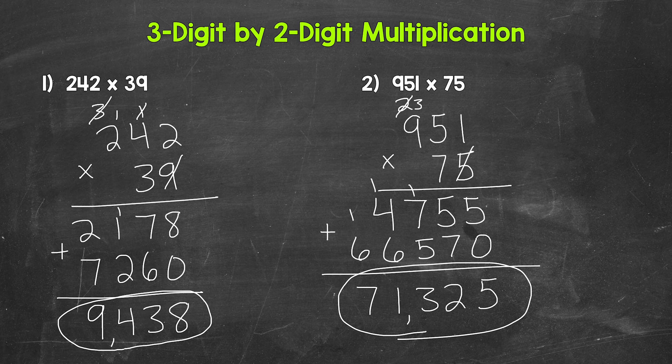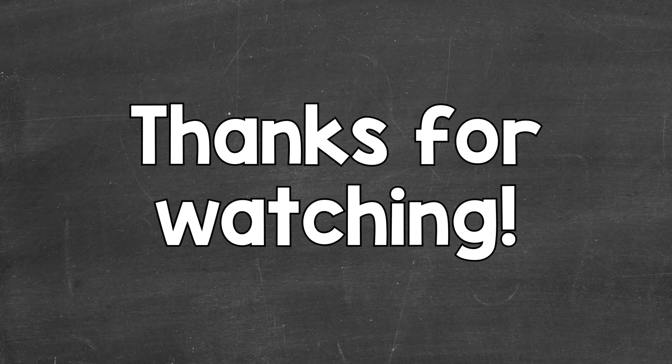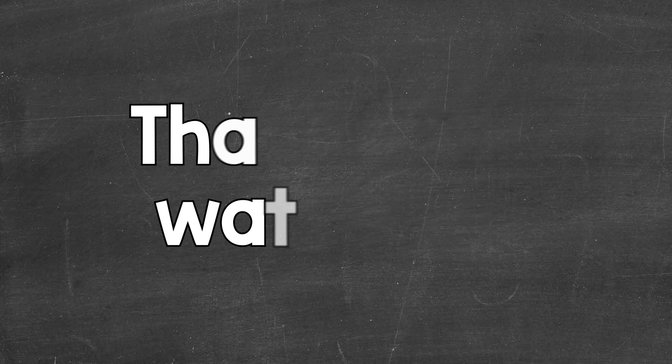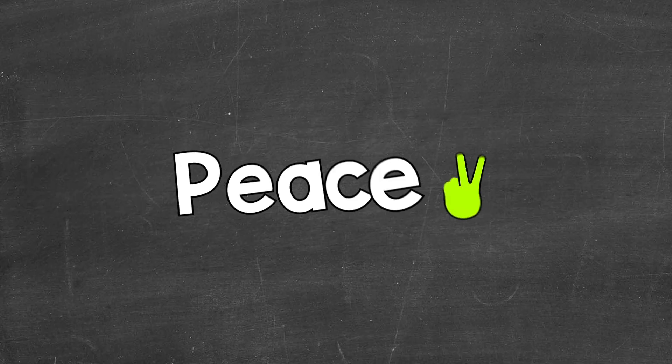So there you have it — that's how to multiply a three-digit number by a two-digit number. I hope that helped. Thanks so much for watching. Until next time, peace.